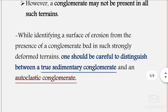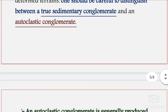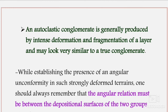When identifying a surface of erosion from the presence of a conglomerate bed in strongly deformed terrain, one should be careful to distinguish between a true sedimentary conglomerate and an autoclastic conglomerate. An autoclastic conglomerate is generally produced by intense deformation and fragmentation of a layer and may look very similar to a true conglomerate, so their differentiation is very important.